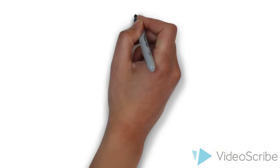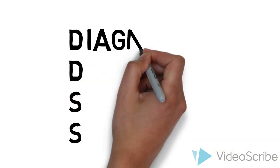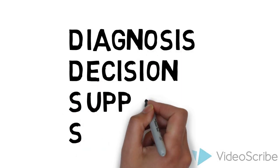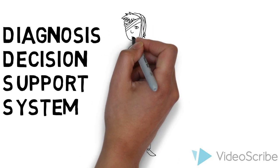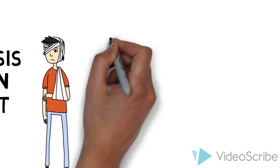A specific kind of Clinical Decision Support System is a Diagnosis Decision Support System, or DDSS. Remember our patient from before? This is the type of system used in his situation.